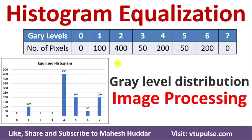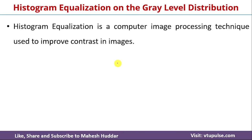Welcome back. In this video, I will discuss how to perform histogram equalization on a given image with gray level distribution. Before we proceed with a simple example, we will try to understand what histogram equalization is. Histogram equalization is a computer image processing technique used to improve the contrast of a given image. If we want to improve the contrast of a particular image, we can use histogram equalization.